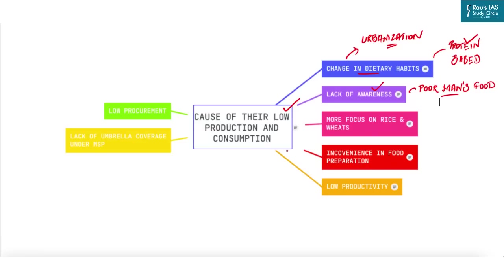Another challenge is the greater focus on rice and wheat due to the Green Revolution and the National Food Security Act 2013, under which two-thirds of India's population receives up to 5 kg of wheat or rice per person per month at ₹2 and ₹3 per kg respectively, tilting the scales against millets. There is also inconvenience in food preparation — wheat dough, due to its gluten protein, is more cohesive and elastic, producing lively and fluffy breads, which is not the case with bajra or jowar.